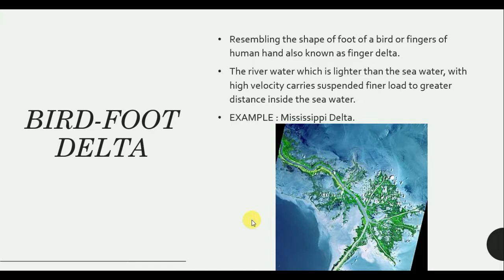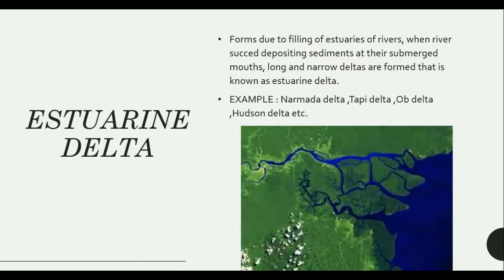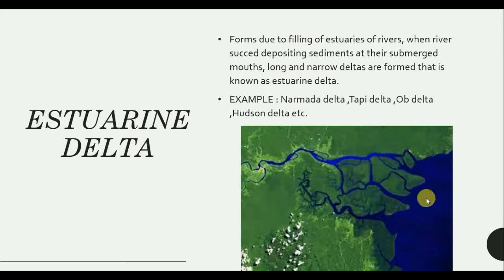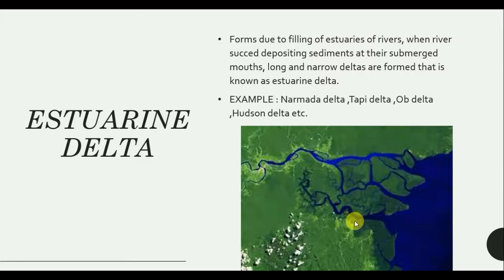Moving on to the next type, which is Estuarine Delta. As the name suggests, it forms from river estuaries — due to the filling of estuaries of a river. When a river deposits sediments at its submerged mouth, long and narrow deltas are formed. Examples include the Narmada Delta, Tapi Delta, Ob, and Hudson Delta.